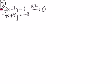So let me double that. So I get 6x minus 4y equals 8.